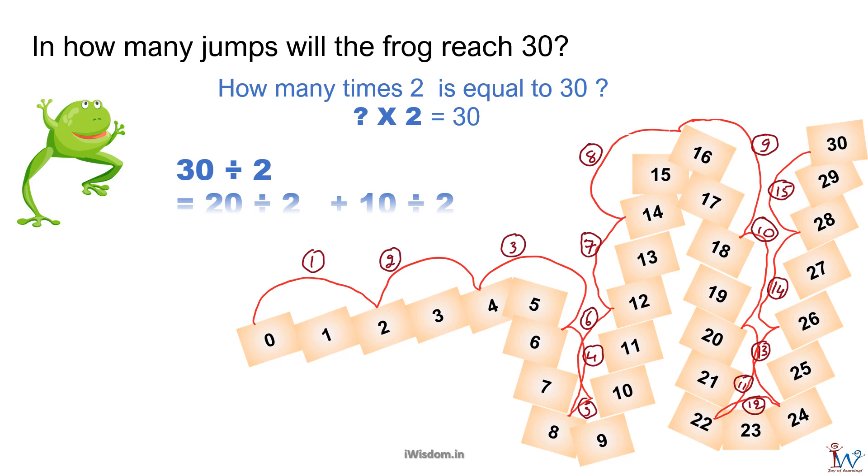So after 10 jumps frog will still be at 20th step. Frog needs 5 more steps. 5 times 2 covers another 10 steps totalling 30. So, 30 divided by 2 is 15. Frog needs 15 jumps to reach 30. Excellent!